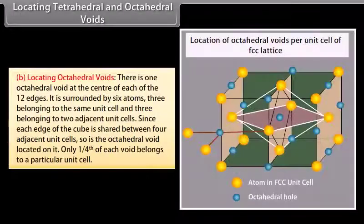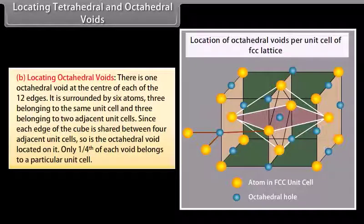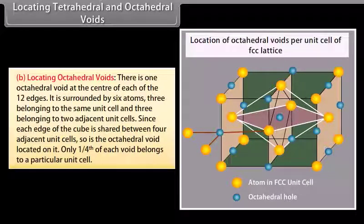Locating octahedral voids: there is one octahedral void at the center of each of the twelve edges. It is surrounded by six atoms — three belonging to the same unit cell and three belonging to two adjacent unit cells. Since each edge of the cube is shared between four adjacent unit cells, the octahedral void located on it is also shared. Only one-fourth of each void belongs to a particular unit cell.